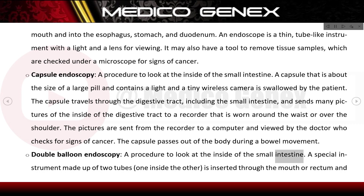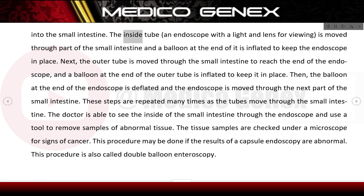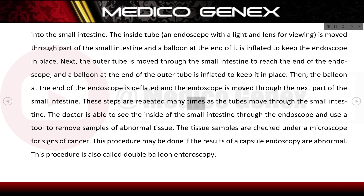Double balloon endoscopy is a procedure to look at the inside of the small intestine. A special instrument made of two tubes — one inside the other — is inserted through the mouth or rectum. The inner tube, an endoscope with a light and lens, moves through part of the small intestine and a balloon at its end is inflated to hold it in place. The outer tube then advances to meet the endoscope, its balloon is inflated, and the inner balloon is deflated so the endoscope advances further. These steps are repeated to traverse the small intestine. The doctor can view the intestine and remove samples of abnormal tissue checked under a microscope. This procedure is also called double balloon enteroscopy and may be done if capsule endoscopy results are abnormal.